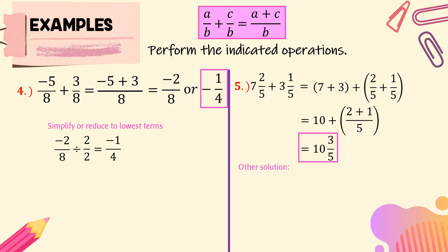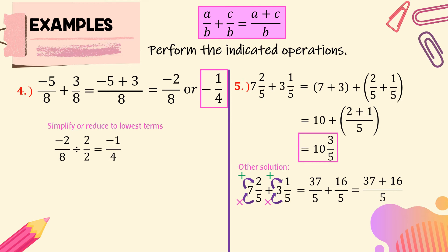For the other solution, we can change the mixed numbers to improper fractions. Given 7 and 2 fifths plus 3 and 1 fifth: first, multiply 5 times 7 to get 35, plus 2, giving us 37 over 5. Then 5 times 3 is 15, plus 1, giving us 16 over 5. Next, add the numerators: 37 plus 16, then copy the common denominator, 5. 37 plus 16 equals 53 over 5, which is an improper fraction. Dividing 53 by 5 gives us 10 and 3 over 5 — the same answer by either method.